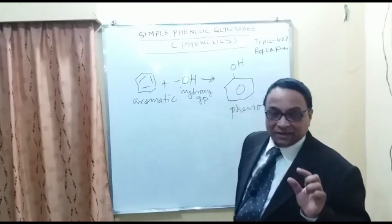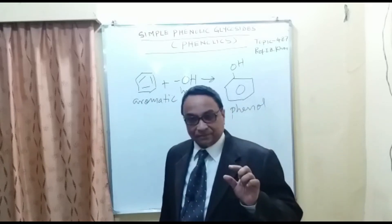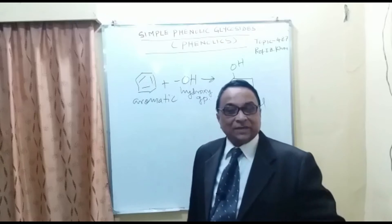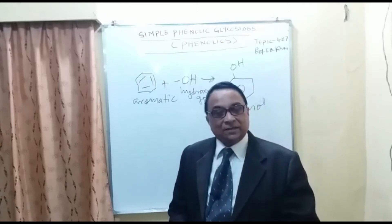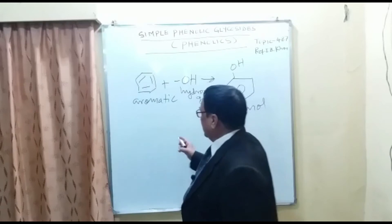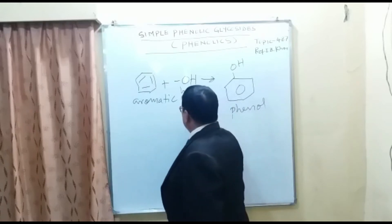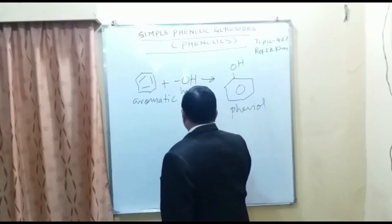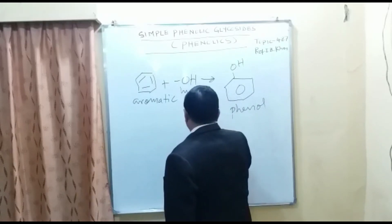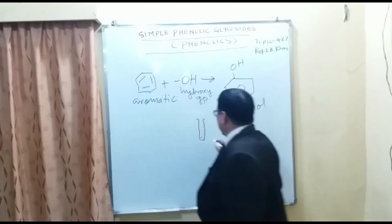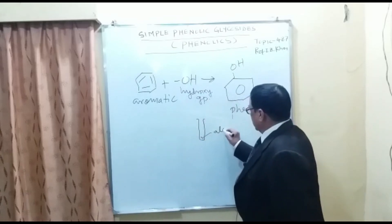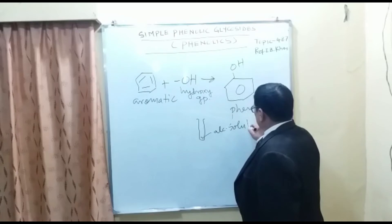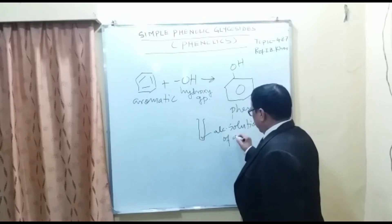There is a specific test for the presence of phenolic glycosides. If you want to test whether a glycoside is phenolic or not, take the alcoholic solution in a test tube and add a specific reagent. You have the alcoholic solution of the glycoside in the test tube.